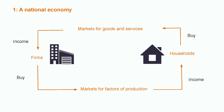Households buy goods and services. Those goods and services are produced by firms. Selling those goods and services provides firms with income. In turn, firms buy factors of production in order to produce those goods and services — mainly labour and capital, which come from households. By providing their labour and capital, households gain an income, with which they buy goods and services.